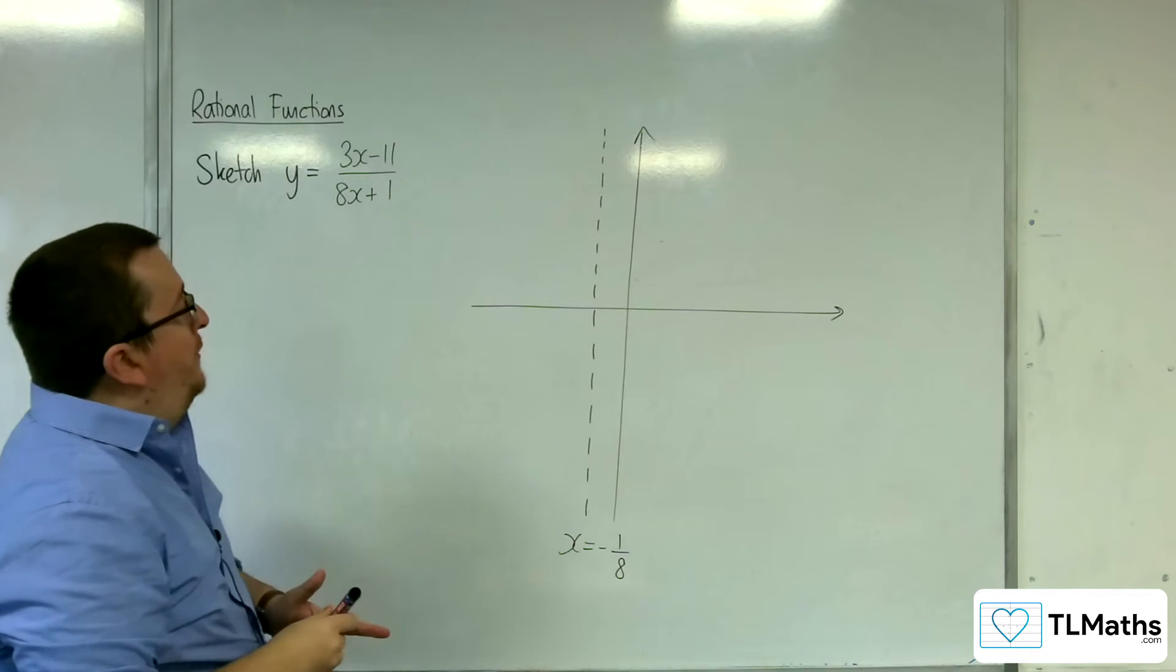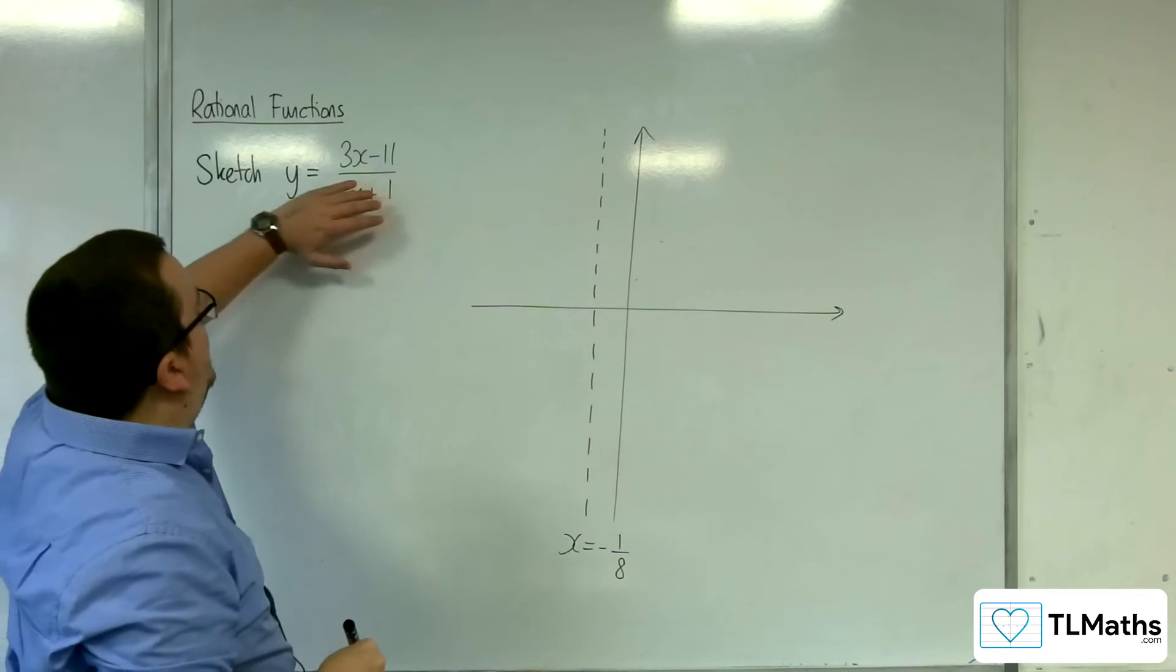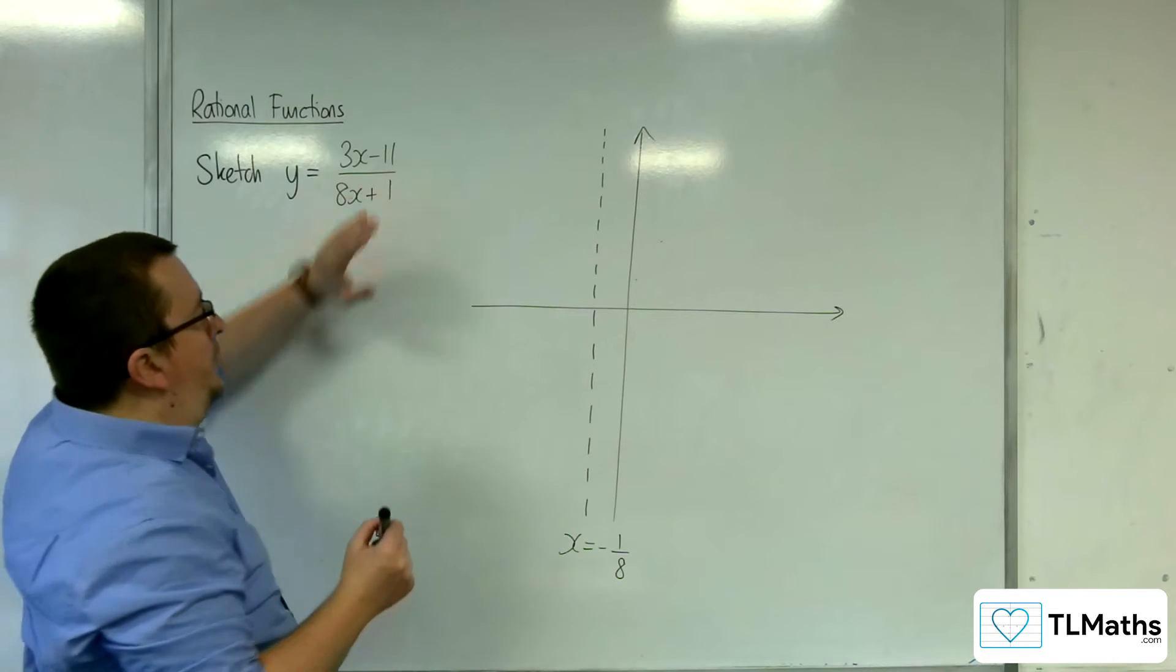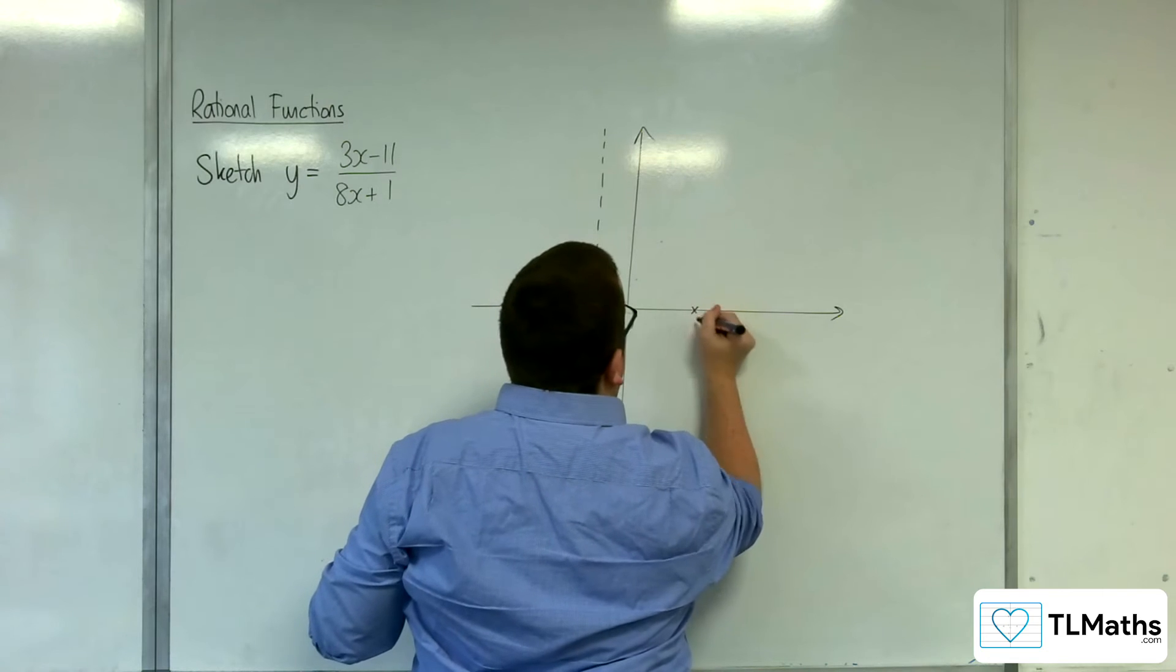Then where is it crossing the coordinate axis? Where is it crossing the x-axis? Well, that would be when the numerator is 0, so that would be at 11 thirds. So 11 thirds somewhere over here.